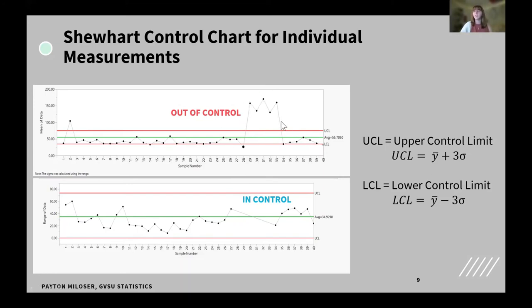Whereas above, we have this one where there's out of control points. So, for my research, out of control points will signal to us that there's potentially an outbreak on those specific days that we would have on the x-axis. What is happening on those days? And that is how our control charts work.